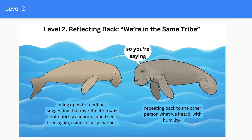Level 2: Reflecting Back — 'We're in the same tribe.' When you practice, note if you are repeating back to the other person what you heard with humility — 'So, you're saying...' — and then being open to feedback, suggesting that your reflection was not quite accurate, and then trying again using an easy manner.